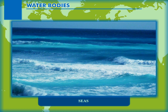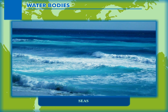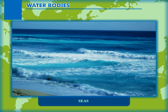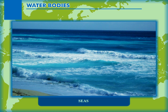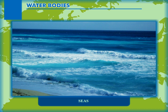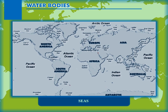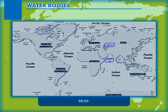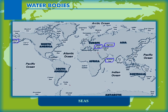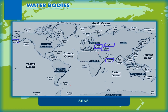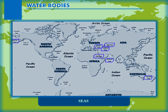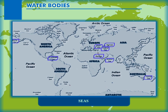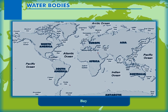Seas: A sea is a large body of water, usually salty, wholly or partly enclosed by land. It is comparatively smaller than the ocean. Some examples of seas of the world are the Arabian Sea, Aral Sea, Bering Sea, Black Sea, Caspian Sea, Tasman Sea, Red Sea, and Caribbean Sea.